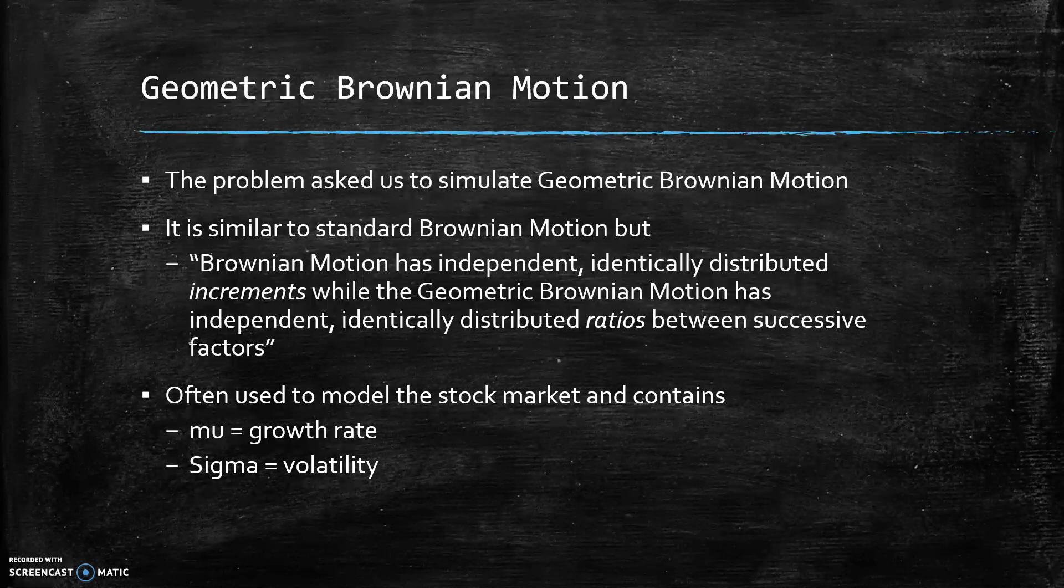So a lot of times this can be used to model the stock market. And it contains these additional variables. So there's mu, which is growth rate, and sigma, which is volatility.